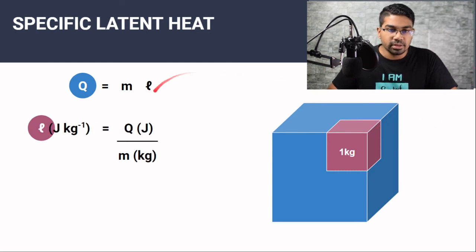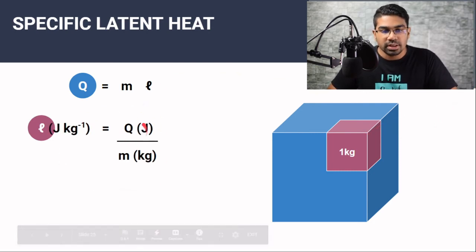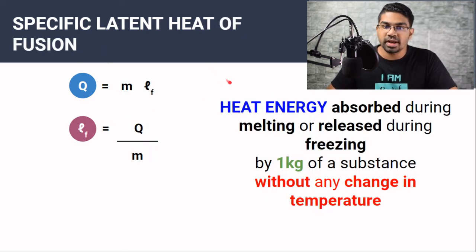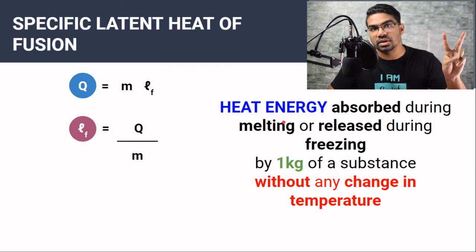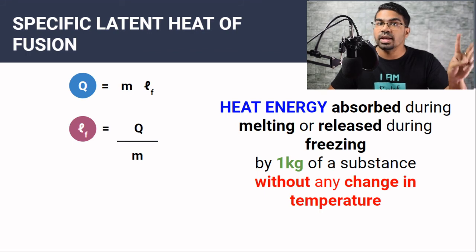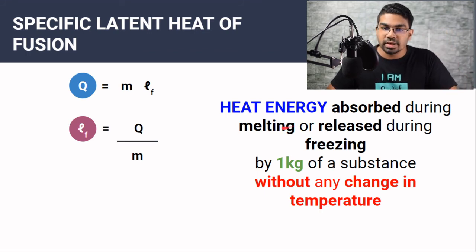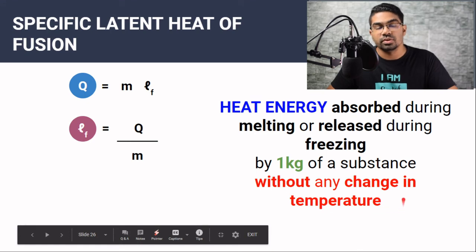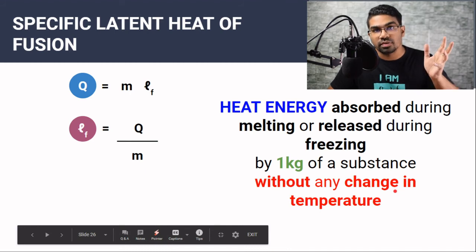The unit for specific latent heat is joules per kilogram, since heat energy is in joules and mass is in kilograms. Specific latent heat of fusion is defined as the heat energy absorbed during melting or released during freezing by one kilogram of a substance without any change in temperature. During this time there will be no change in temperature — no increase or decrease in the average kinetic energy of the substance.